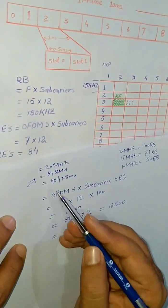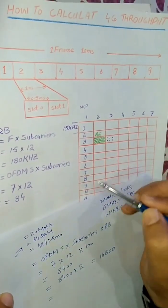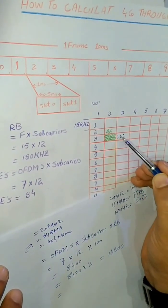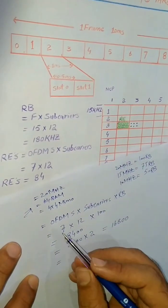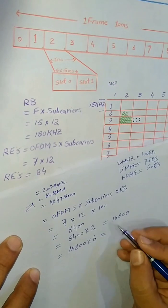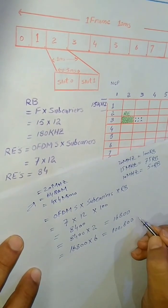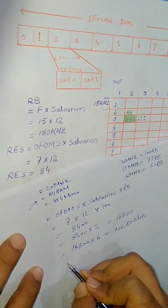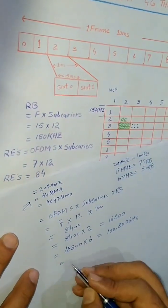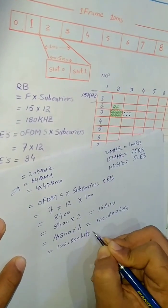Now let's check the second condition, which is 64QAM. 64QAM carries 6 bits per RE. For reference, 16QAM carries 4 bits per RE and QPSK carries 2 bits per RE. Since we have 64QAM, we multiply 16,800 by 6 bits. These two slots equal one millisecond in the time domain, so we divide the total number of bits by one millisecond.